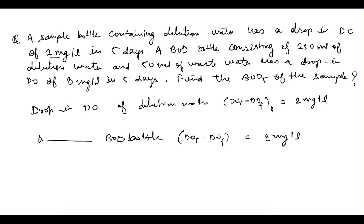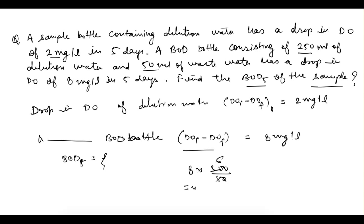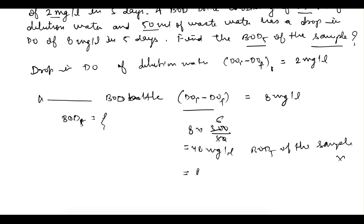We have to find out the BOD5 of the sample. If we simply say the drop in DO for the BOD bottle is 8 mg/L and multiply by the dilution factor — 300 by 50 equals 6 — we get 48 mg per liter. But that would be wrong, because this 48 mg/L is the BOD5 of waste plus BOD5 of dilution water. We need only the BOD5 of the waste.